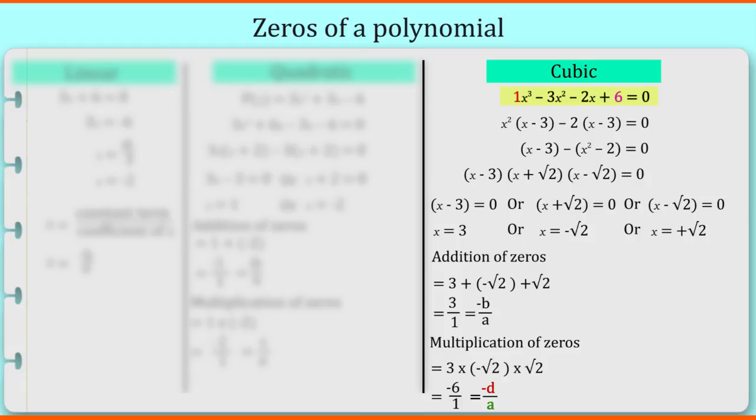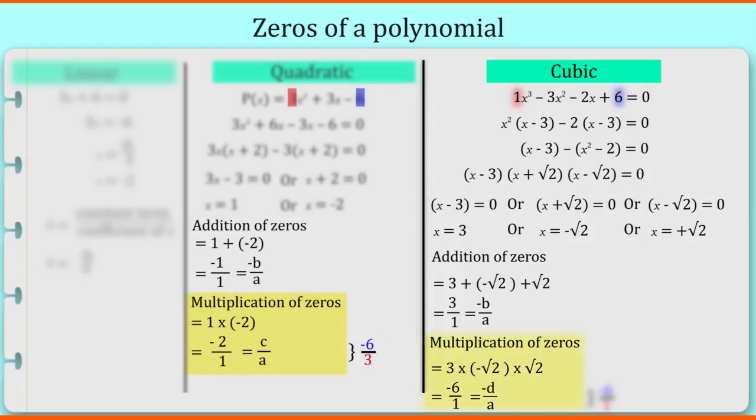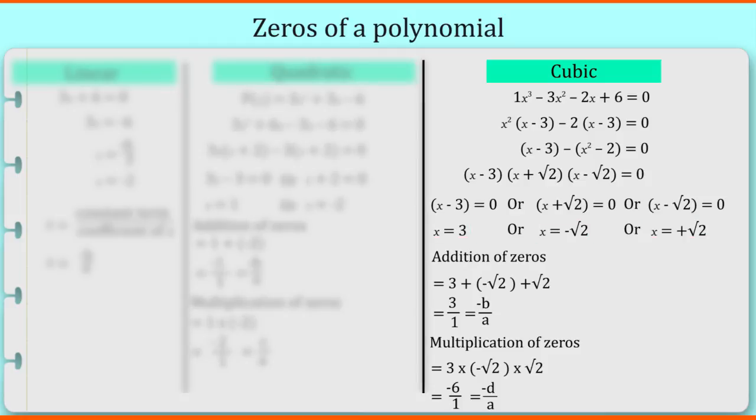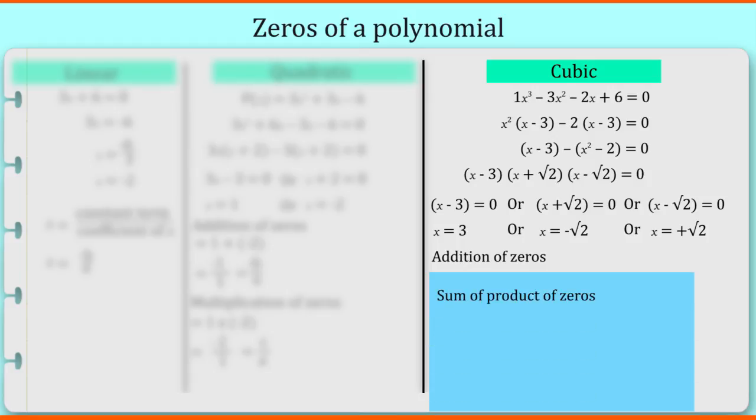Friends, please remember product of zeros for quadratic and cubic are ratio of coefficient of the last term to the first term. As cubic equations have more than one zero, there will be one more relation that is sum of products of zeros. So here, for this example, we can write it and we will get an answer as minus 2 by 1.